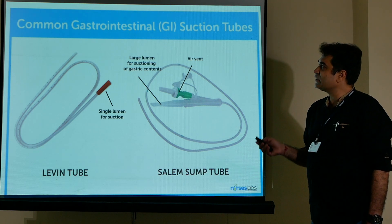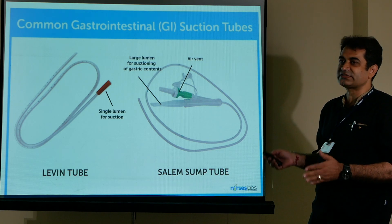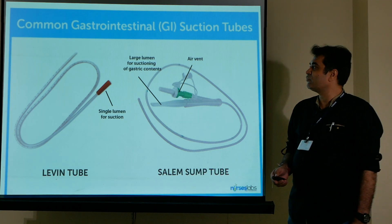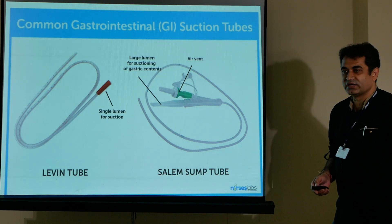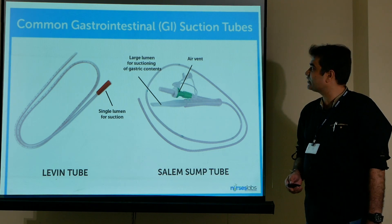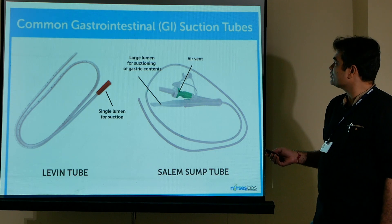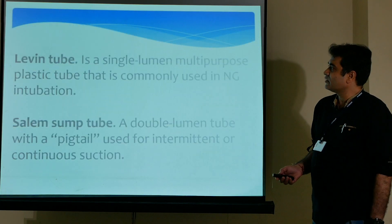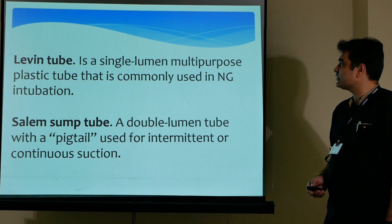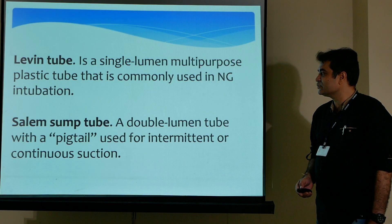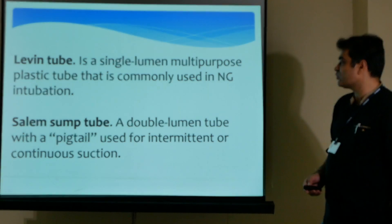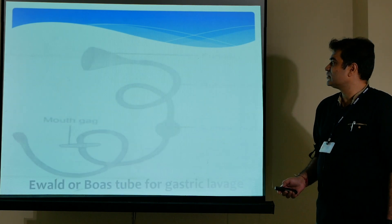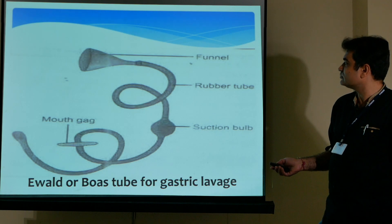For performing gastric lavage, earlier we used the Walls and Boas tube, but nowadays with the Ryle's tube and nasogastric tube we can perform gastric lavage. Commonly used suction tubes are the Levin tube and the Salem sump tube. The Levin tube is a single-lumen multipurpose plastic tube used in nasogastric intubation, while the Salem sump tube is a double-lumen tube with a pigtail used for intermittent or continuous suction.